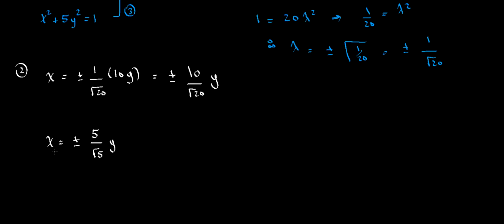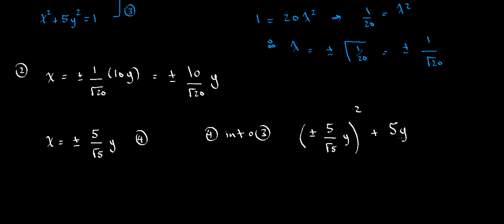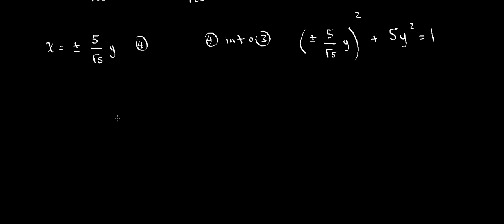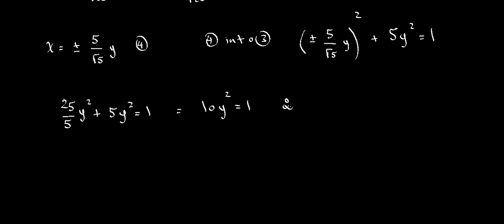We now have a new relation — call it equation 4 — and we substitute it into equation 3, which is x squared plus 5y squared equals 1. So x squared becomes (plus or minus 5 over root 5 times y) squared, giving 25 over 5 times y squared, plus 5y squared equals 1. This simplifies to 10y squared equals 1, so y squared equals 1/10, and y equals plus or minus 1 over root 10.